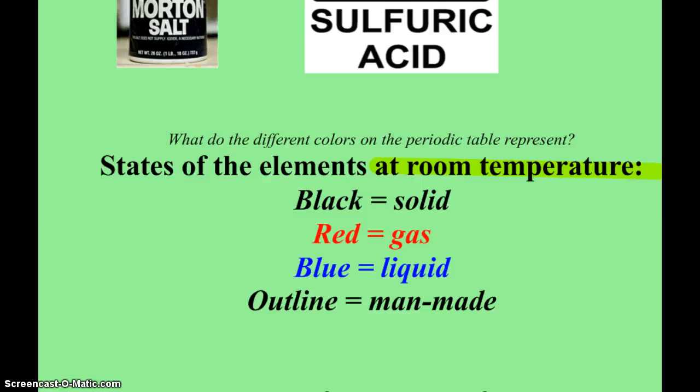And the outline symbols are man-made. So, again, every element after number 92, uranium, is man-made. And there's actually two others, promethium number 61, and technetium number 43, that are man-made. So, realistically, there's only 90 elements on this planet that exist naturally. Alright. And from them, again, multiple things around you are made.